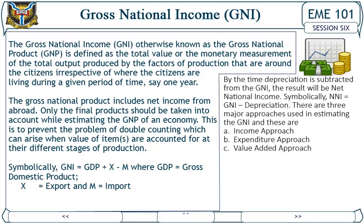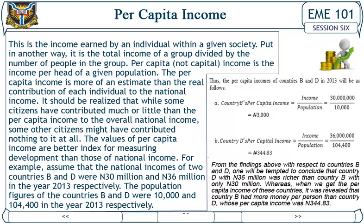Per Capita Income: Per capita income is the income earned by an individual within a given society. Put in another way, it is the total income of a group divided by the number of people in the group.